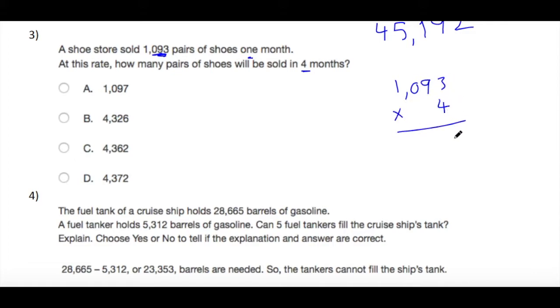4 times 3 equals 12, write 2 and carry up 1. 4 times 9 equals 36 plus 1 equals 37, write 7 and carry up 3. 4 times 0 is 0, and we have 3. 4 times 1 is 4. So the answer will be D, 4,372.